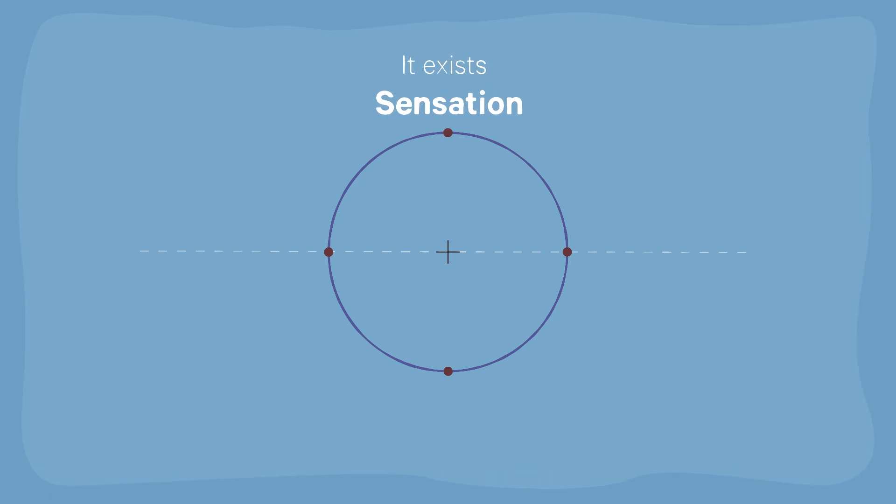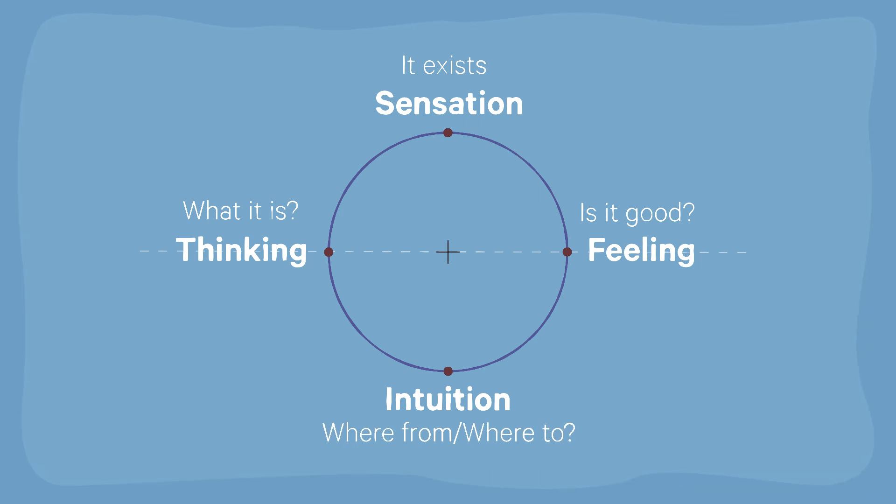Sensation tells us that something exists. Thinking tells you what it is. Feeling tells you whether it is agreeable or not. Intuition tells you whence it comes and where it goes to.